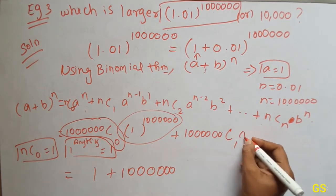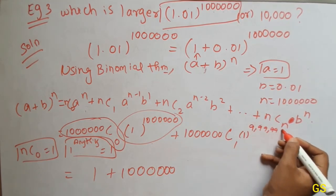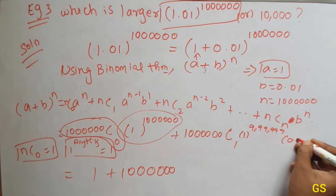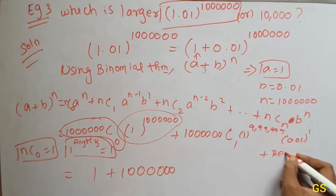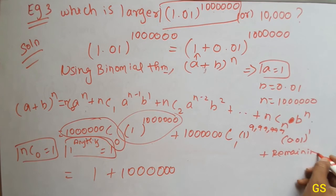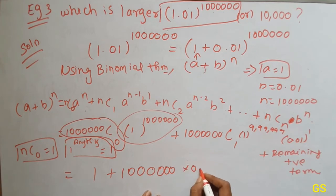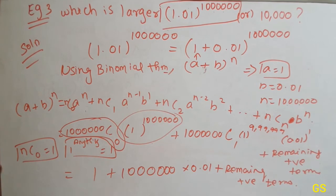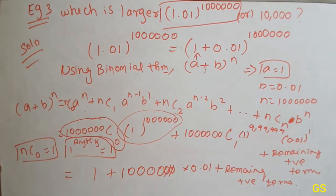1 power 9,99,999 into b, which is 0.01 — 0.01 the whole power 1 — times plus remaining positive terms. So 0.01 power 1 into 0.01, okay, plus remaining positive terms. So 1 plus this multiply — you have a point under 0 under digit, so under 0 cut it — 10,000.